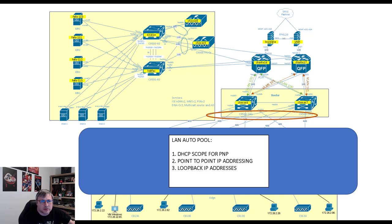LAN automation includes a DHCP scope for the plug-and-play process so that the switches can bootstrap themselves, get an IP address via DHCP, become routable, reach out to DNA Center, get claimed, and get their config allocated. The second part of the LAN auto pool will be for point-to-point IP addressing. Once LAN automation stops, DNA Center will deliver every configuration to every device discovered programmatically, and those devices will configure their layer 3 links and the routing over those links. Another part of the LAN auto pool is reserved for loopback addresses, which DNA Center hands out to each device.